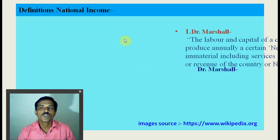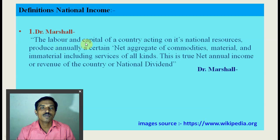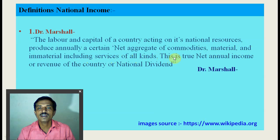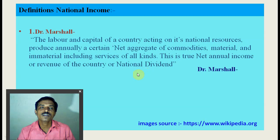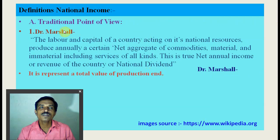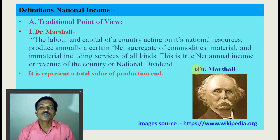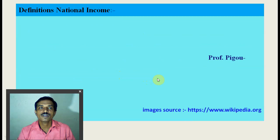The definition of national income given by Dr. Marshall represents the traditional point of view. According to Marshall: 'The labor and capital of a country, acting on its natural resources, produce annually a certain net aggregate of commodities — material and immaterial — including services of all kinds. This is the true net annual income or revenue of the country.' Dr. Marshall's definition includes labor, capital, and natural resources producing a net aggregate of commodities, materials, and services. It represents the total value of production and is from the production point of view.